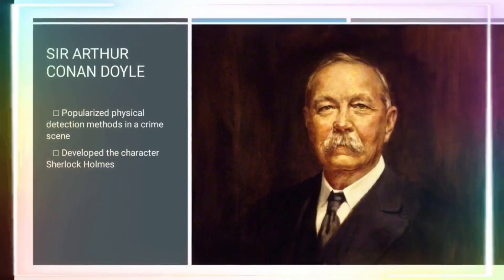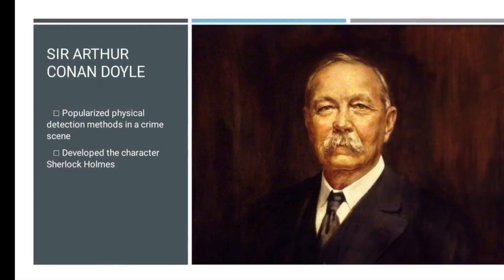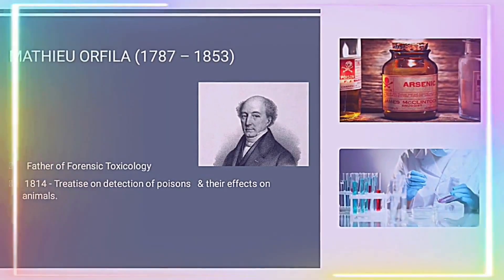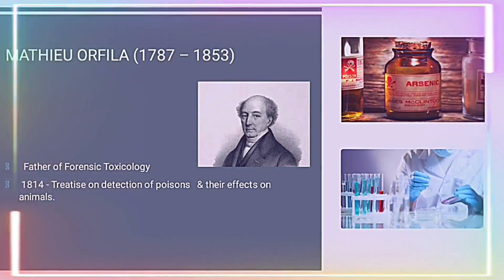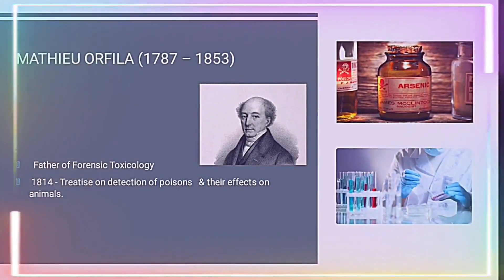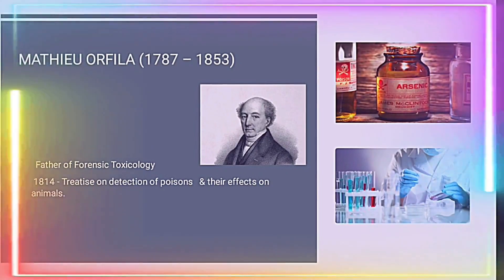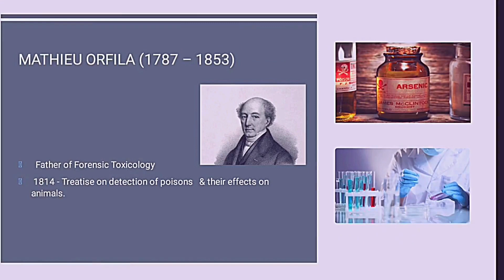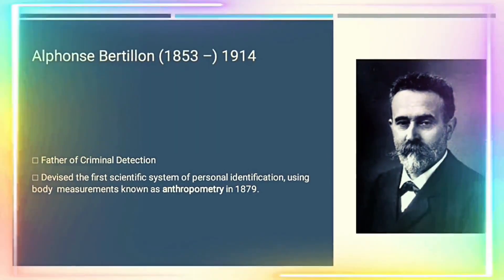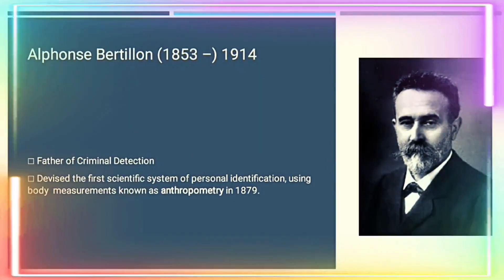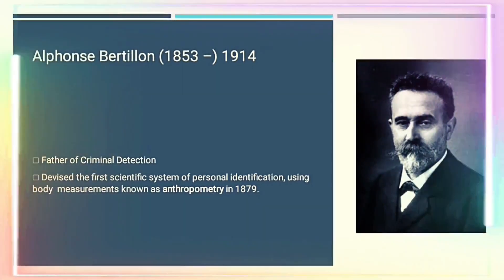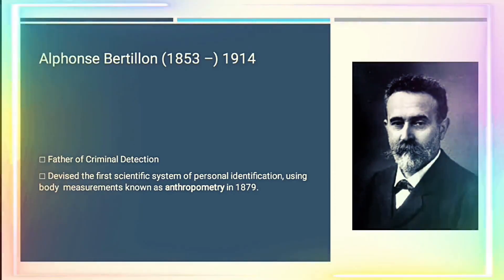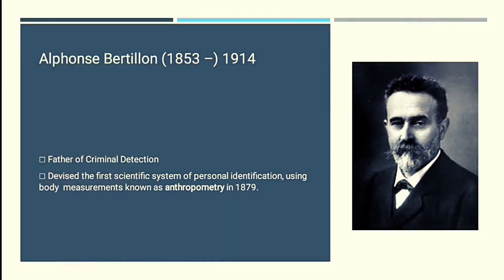Sir Arthur Conan Doyle popularized physical detection methods in a crime scene and developed the character Sherlock Holmes. Matthew Orfila, the father of forensic toxicology, published in 1840 a work on the detection of poisons and their effects on animals. Alphonse Bertillon, the father of criminal detection, devised the first scientific system of personal identification using body measurements known as anthropometry in 1879.